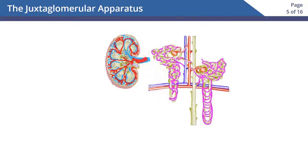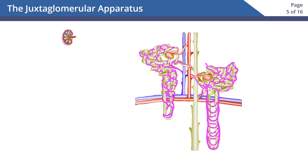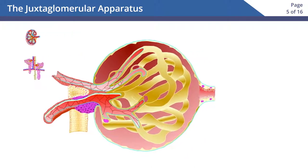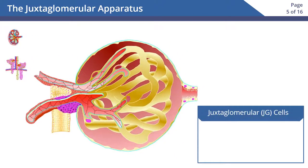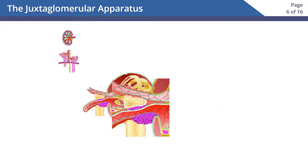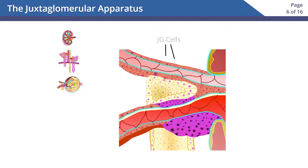The specialized cells of the afferent arteriole at this region are called juxtaglomerular (JG) cells. These cells contain the enzyme renin and function as mechanoreceptors to sense blood pressure. Let's zoom in to see the JG cells up close.